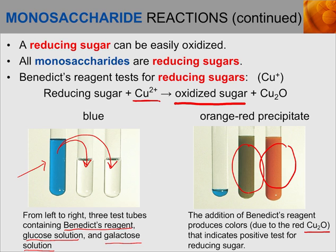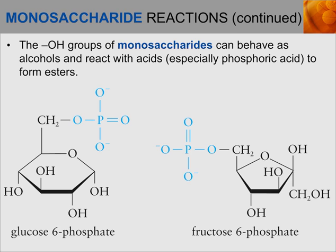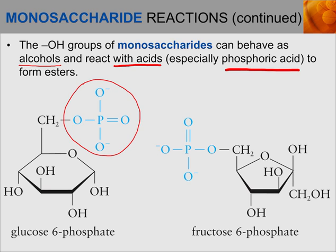You'll be able to see this reaction in your lab video for the week — it is cool to see those colors changing. Another reaction that can occur involves the OH groups on our monosaccharides. These can behave as alcohols and react with acids, especially phosphoric acid, forming esters. After the reaction with phosphoric acid, we end up with a PO₄²⁻ group connected to the sixth carbon on glucose.